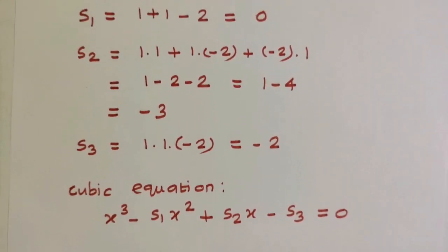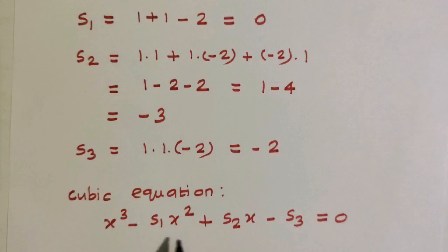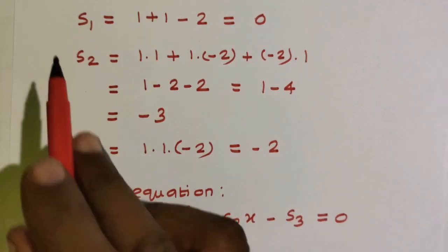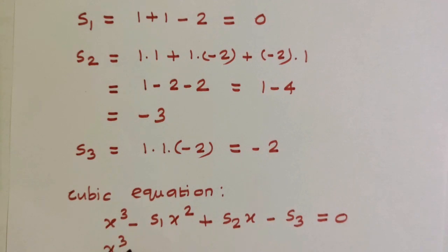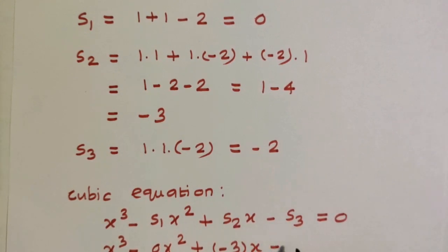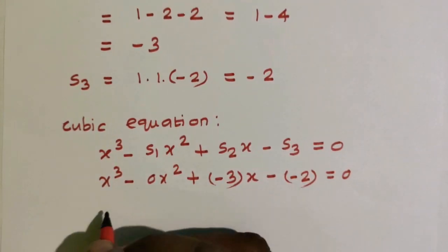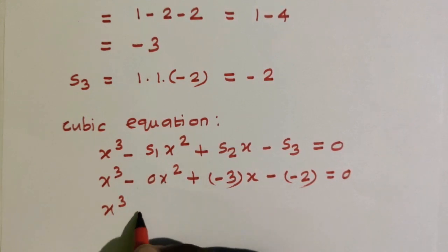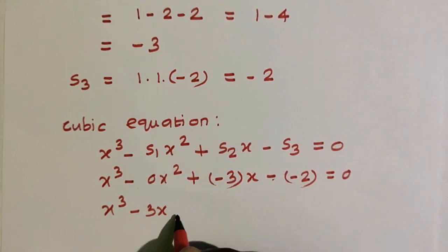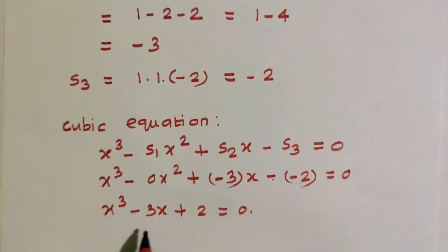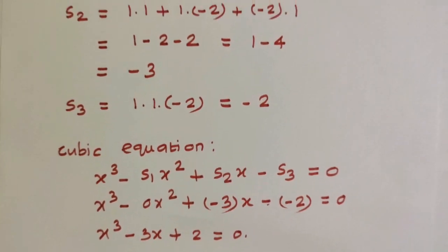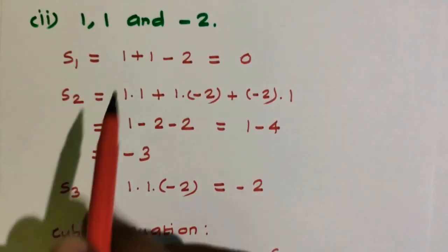Next, the product of the roots: s3 equals 1 into 1 into minus 2, which is equal to minus 2. The cubic equation general form is x cube minus s1 x square plus s2 x minus s3 equals 0. Substituting: x cube minus 0 times x square plus minus 3 times x minus minus 2 equals 0. So x cube minus 3x plus 2 is equal to 0. This is the cubic polynomial equation whose roots are 1, 1, and minus 2.